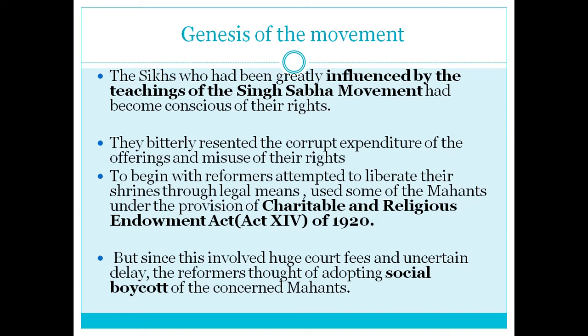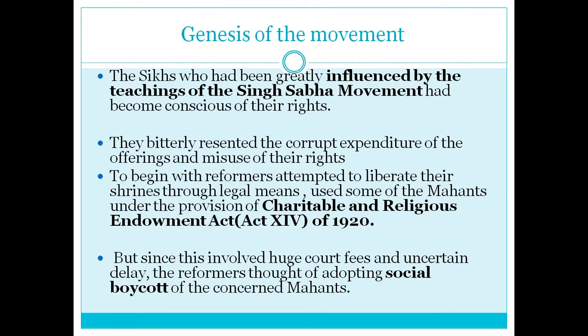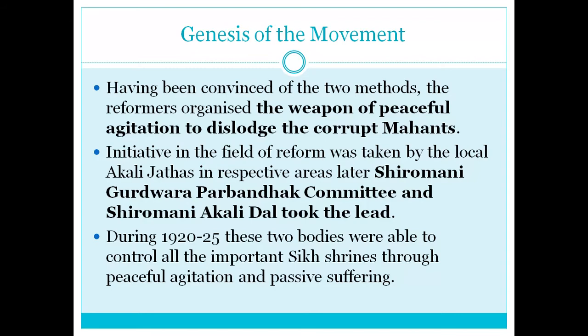The Sikhs bitterly resented the corrupt expenditure of offerings and the misuse of their rights. They first tried to use legal means — they sued some Mahants under the provisions of the Charitable and Religious Endowment Act of 1920. But using this provision meant huge court fees and uncertain delays. The second method was social boycott, so that nobody would talk to the concerned Mahants. Finding that neither the legal procedure nor the social boycott helped, the reformers organized the weapon of peaceful agitation to dislodge the corrupt Mahants.